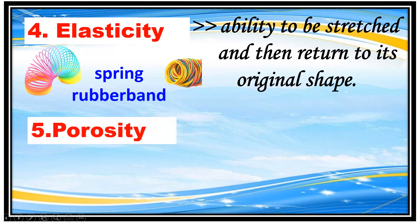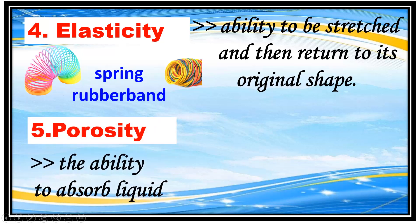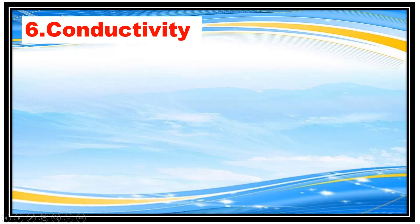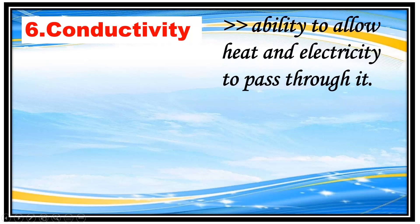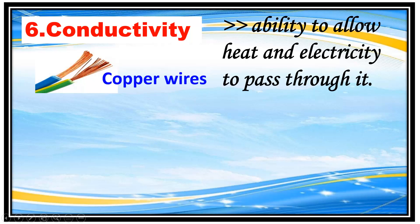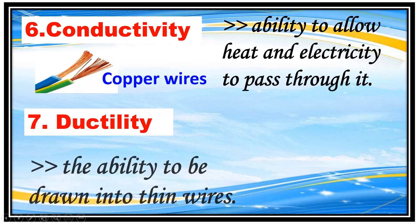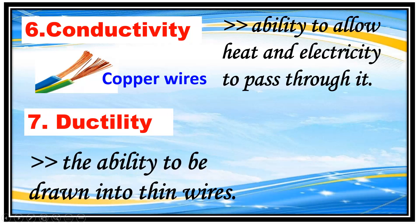Number 5 is the ability of material to absorb liquid, like cotton and sponge. Number 6 is the ability of material to allow heat and electricity to pass through it, like copper wires.